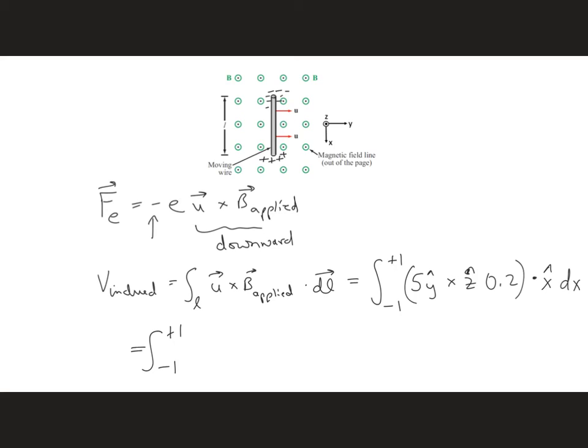And Y hat crossed with Z hat is X hat, and 5 times 0.2 is 1. So we get 1 X hat dotted with X hat dx, which gives us a value of 1 from minus 1 to positive 1, which is 1 plus 1 is 2 volts.